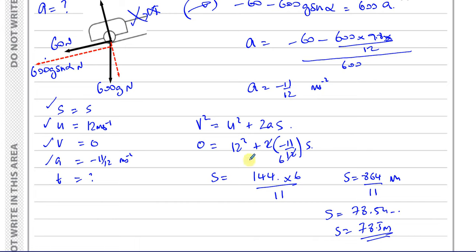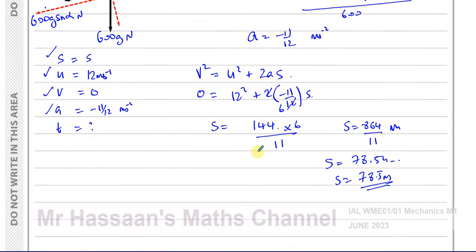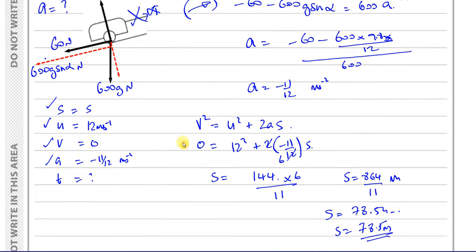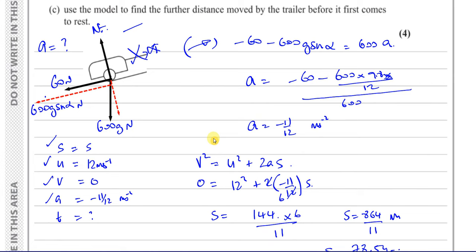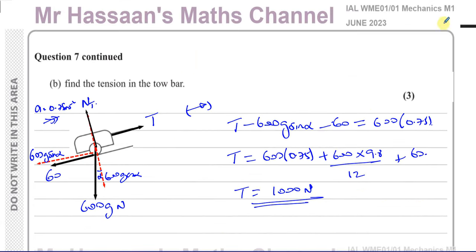We can write it to 2SF or 3SF — since we use g in our calculations, both are accepted as stated at the beginning of the paper. We'll stick to 3SF, so S = 78.5 meters. That answers question number 7. I hope that was clear — thank you for watching. Other questions from this paper can be found in the playlist. There's also a link to questions on connected particles, and you can subscribe by clicking the link.